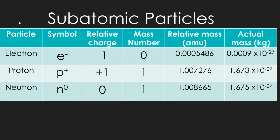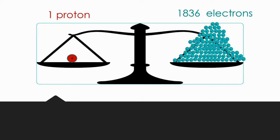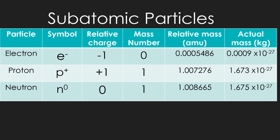We can parse out the subatomic particles: electrons have a charge of minus one but a mass of essentially zero. That's not to say they weigh nothing — it's that they weigh so much less than everything else in the atom. A proton equals 1836 electrons in mass, so an electron's mass is essentially nothing compared to a proton.